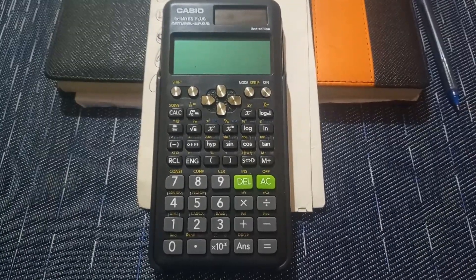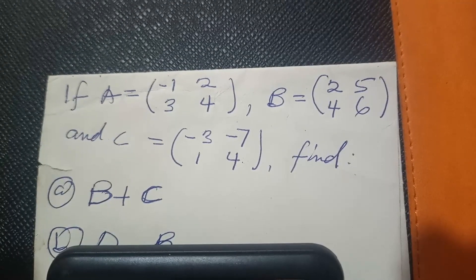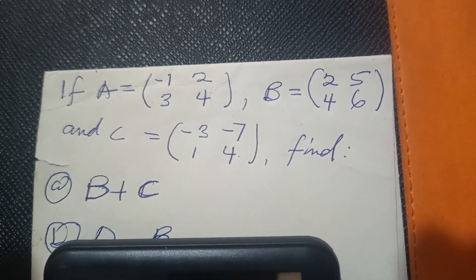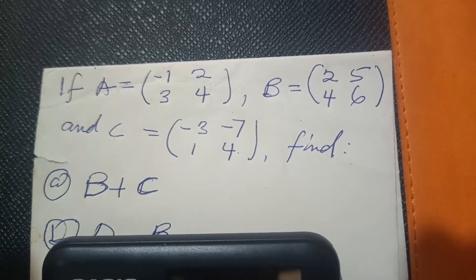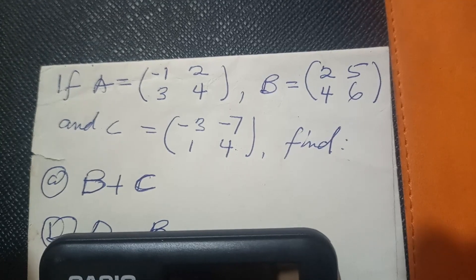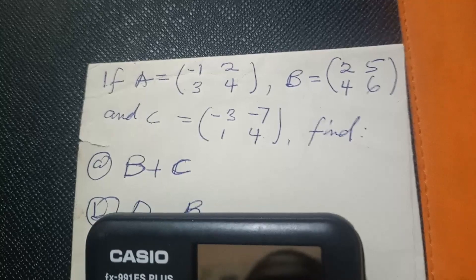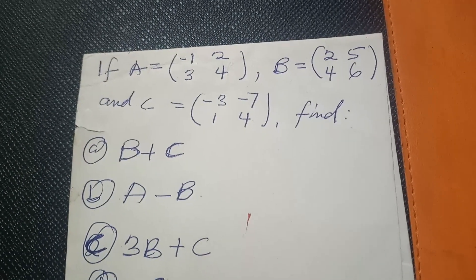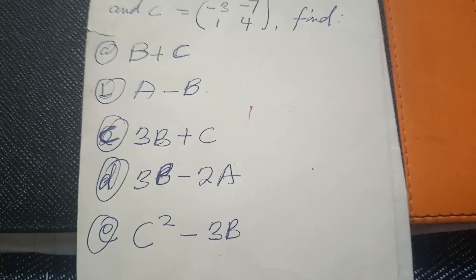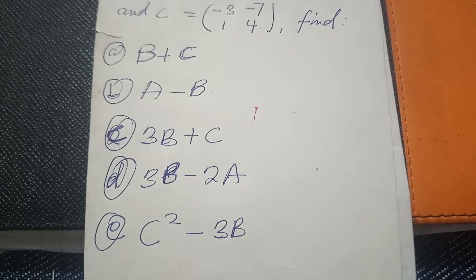To solve a question like this: matrix A has entries negative 1, 2, 3, 4; matrix B has entries 2, 5, 4, 6; and matrix C has entries negative 3, negative 7, 1, 4. Find the following: A) matrix B plus C, B) matrix A minus B, C) 3 matrix B plus C, D) 3B minus 2A, and E) A squared minus 3B.